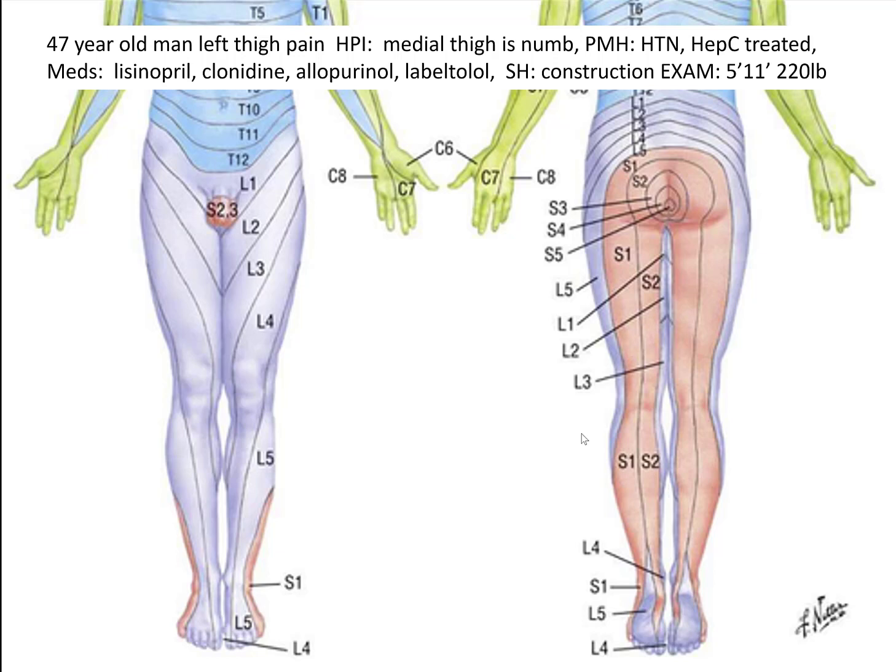No symptoms on the right. Past medical history: high blood pressure, hepatitis C, which was successfully treated with medications. So Ocean, what did you do with this man? Just going through pain and numbness as his biggest complaint.